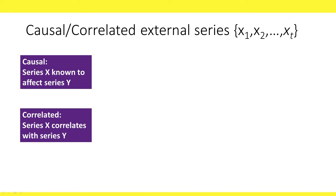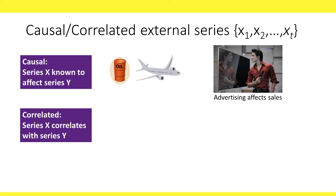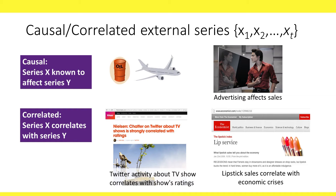External time series that can potentially improve our forecasts are those that are correlated with our series, either due to a causal relationship or due to simple correlation. We'll use the notation X to denote such an external series. Examples of a causal relationship include the effect of oil prices on airfare, or the effect of advertising on sales. Examples of correlated series include ratings of a TV show correlated with Twitter activity about it, or the so-called lipstick indicator, which says that lipstick sales go up just before economic crisis. In either case, we can integrate a causal or correlated series in the exact same fashion.